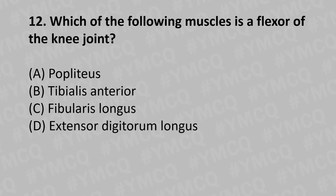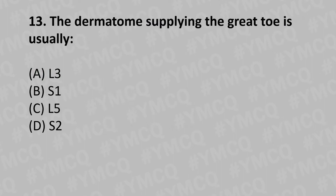Moving to our twelfth question: which of the following muscles is the flexor of the knee joint? Option A: popliteus, Option B: tibialis anterior, Option C: fibularis longus, Option D: extensor digitorum longus. And the answer is Option A: popliteus.